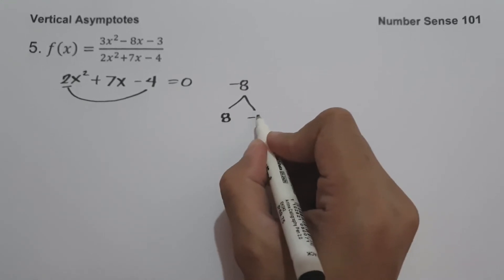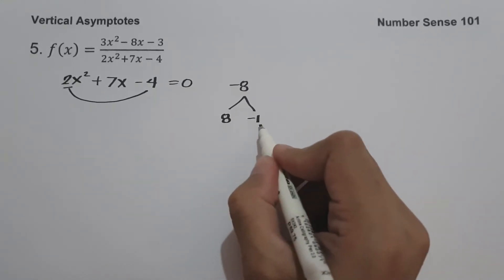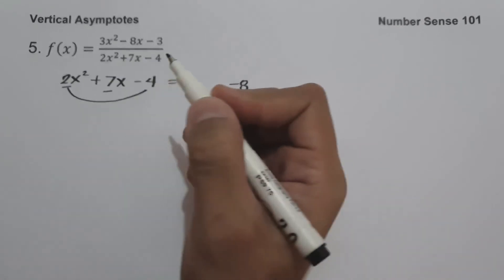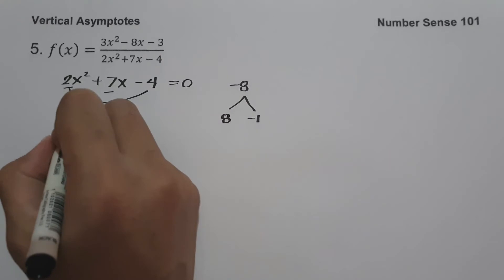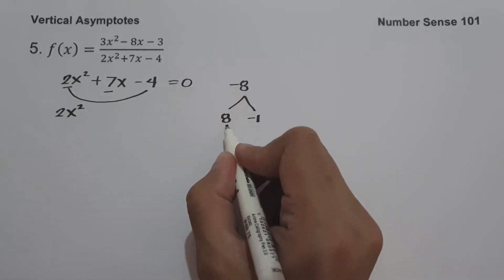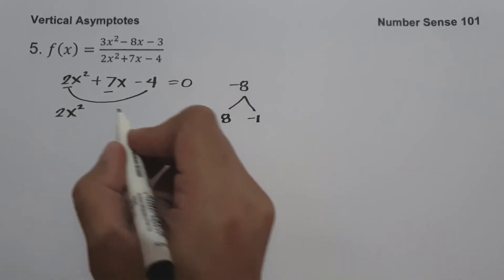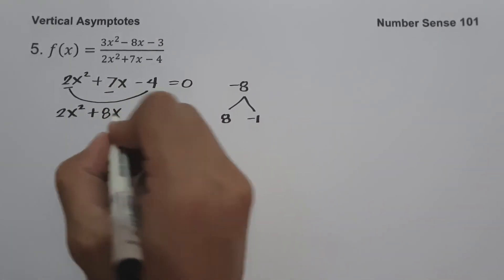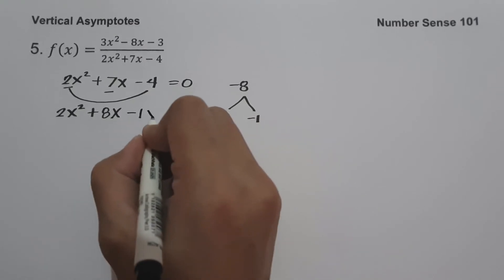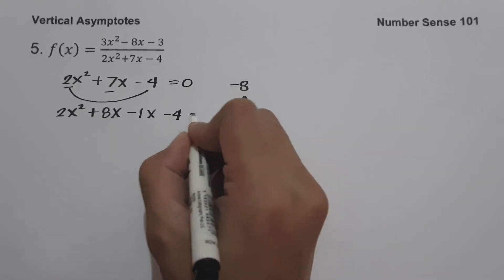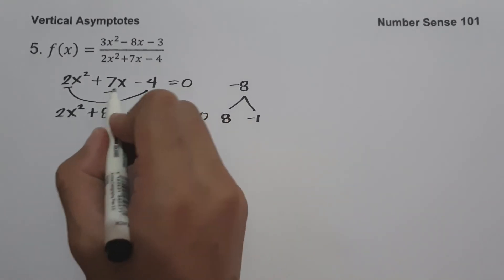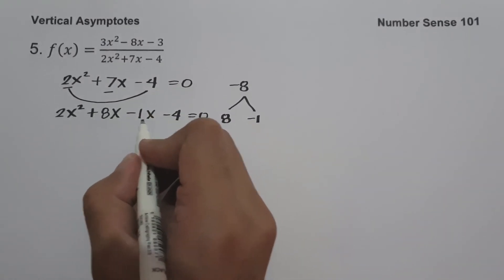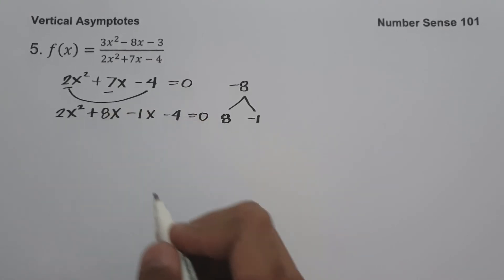That is 8 and negative 1. 8 multiplied by negative 1 is negative 8, and 8 plus negative 1 is 7. So let us rewrite 2x squared, replacing 7x with 8x and negative 1x, since 8x minus 1x equals 7x. Then we have plus 8x minus 1x minus 4 equal to 0.